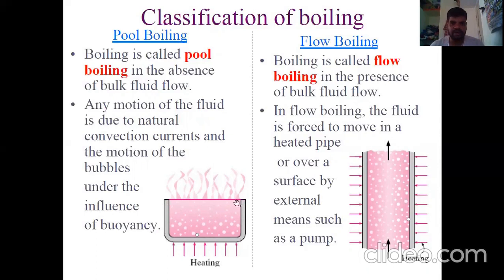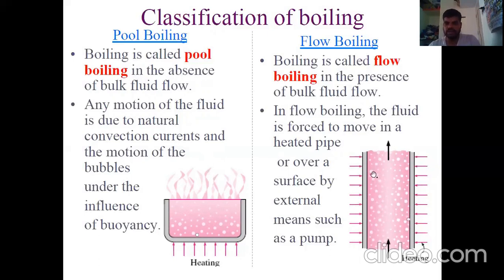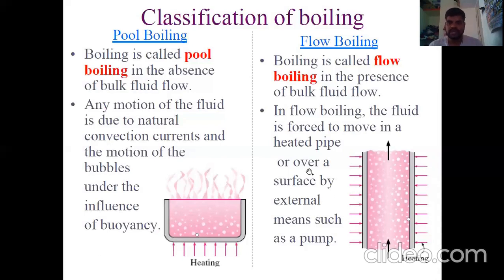A good example of pool boiling is a pan filled with water heated at the bottom surface. In flow boiling, the fluid motion is present. An example is a pipe where liquid flows inside and the circumference of the pipe is given a heat flux, so the adjacent liquid gets heated and boiling occurs. An external pump or agency is used to flow the liquid. In summary: in pool boiling, bulk fluid motion is absent; in flow boiling, bulk fluid motion is present.